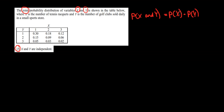Before we do that, we also need to calculate the probability of x and the probability of y, for each of the three cases separately. The probability of x equal to 1 equals 0.3 plus 0.15 plus 0.05, that's 0.5. The probability that x equals 2 is 0.18 plus 0.09 plus 0.03, that's 0.3. And the probability that x equals 3 is 0.12 plus 0.06 plus 0.02, that's 0.2.